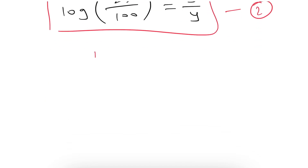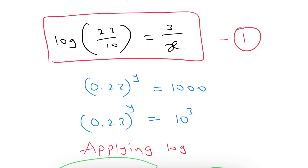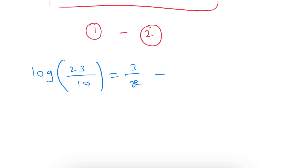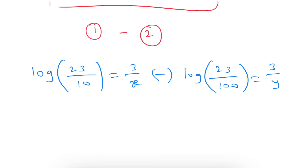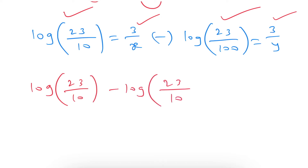Now we simplify by computing equation 1 minus equation 2. Equation 1: log(23/10) = 3/x. Equation 2: log(23/100) = 3/y. Subtracting left sides from left sides and right sides from right sides: log(23/10) minus log(23/100) equals 3/x minus 3/y.